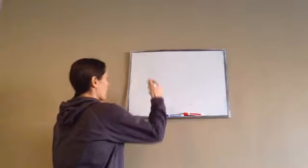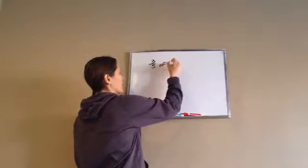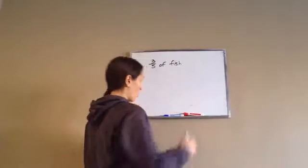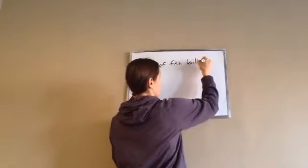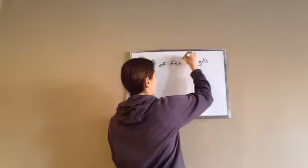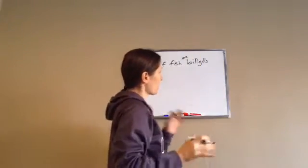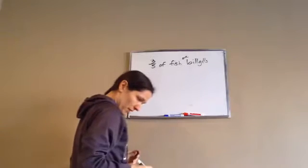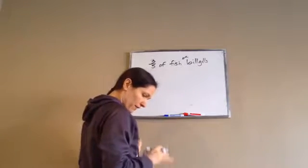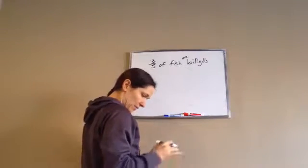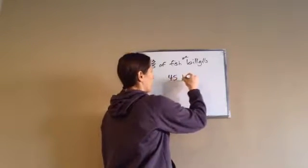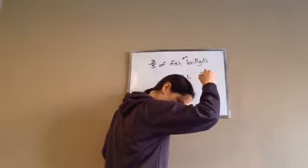Three-fifths of the fish in the pond are bluegills. If there are 45 bluegills, how many fish are there total in the pond? Okay, so there's 45 bluegills.